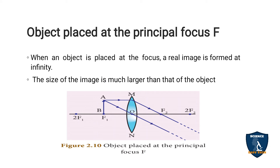Object placed at the principal focus F. When an object is placed exactly at the principal focus, using the same two rules — one ray passes through the optic center and another is parallel to the principal axis — the image is formed far away, that is at infinity. We cannot identify where the image will be formed. The image size is larger compared to the object.